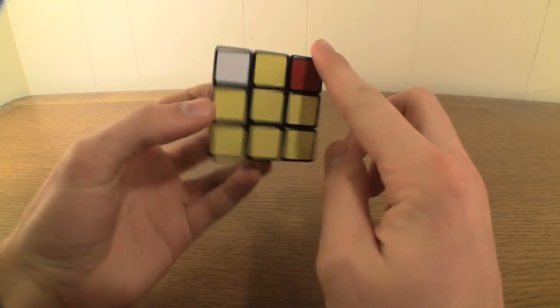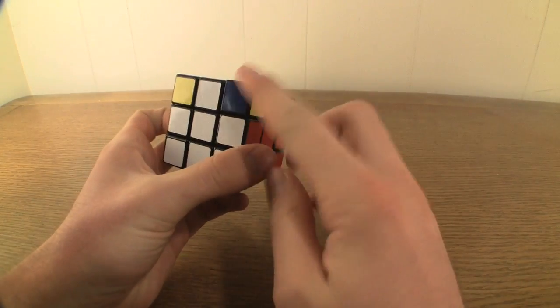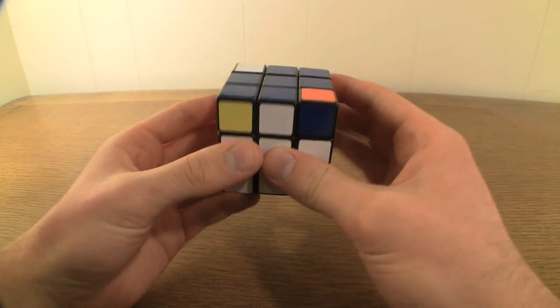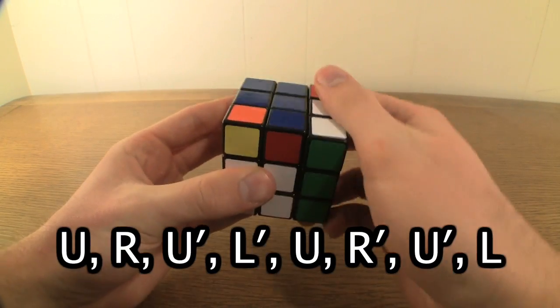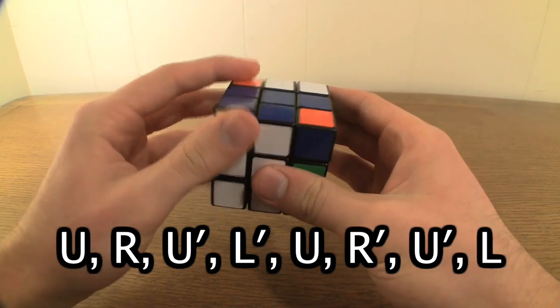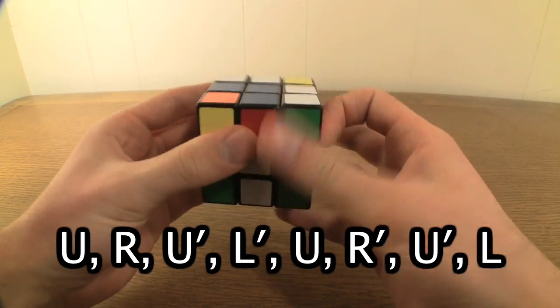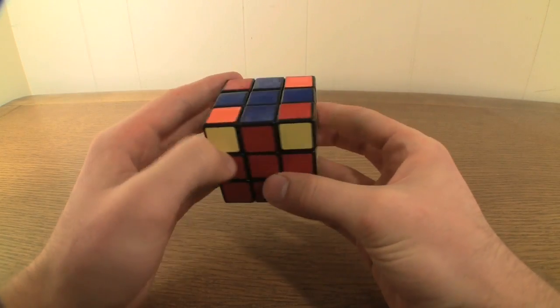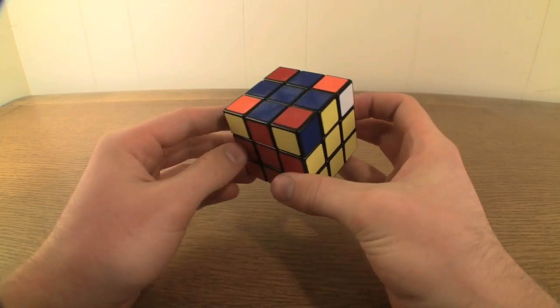If none of your top corner pieces are in the correct place, hold your cube with the blue cross on top and perform the algorithm U, R, U', L', U, R', U', L'. Check your top layer corner pieces again. One of your top corner pieces will now be in the correct place.